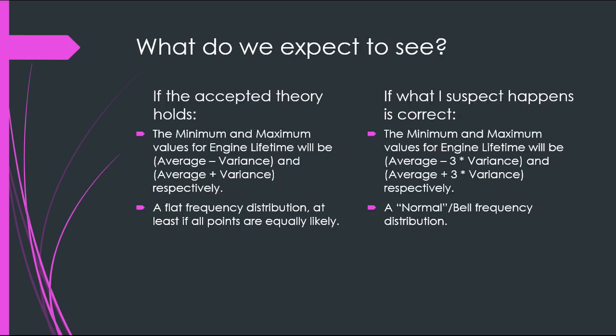So what do I expect to see? If the accepted theory holds, the minimum value will be average minus variance and the maximum will be average plus variance, and the frequency distribution should be a flat line because every point is equally likely. But if what I suspect is correct, the minimum will be around average minus three times the variance and the maximum around average plus three times the variance, and we should expect to see a normal frequency distribution — also known as a bell curve.